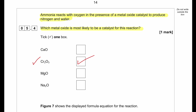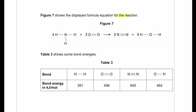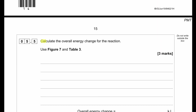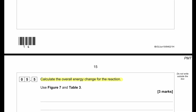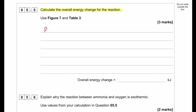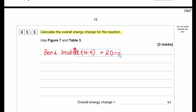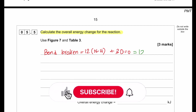Figure 7 shows the displayed formula equation for the reaction of ammonia reacting with oxygen to produce nitrogen and water. The bond energies are given. Calculate the overall energy change for the reaction. We need to find the energy for the bonds broken, then the energy for the bonds made, and then calculate the overall energy change. We have 12 N–H bonds and 3 O=O bonds on the reactant side, and 2 N≡N bonds and 12 O–H bonds on the product side.